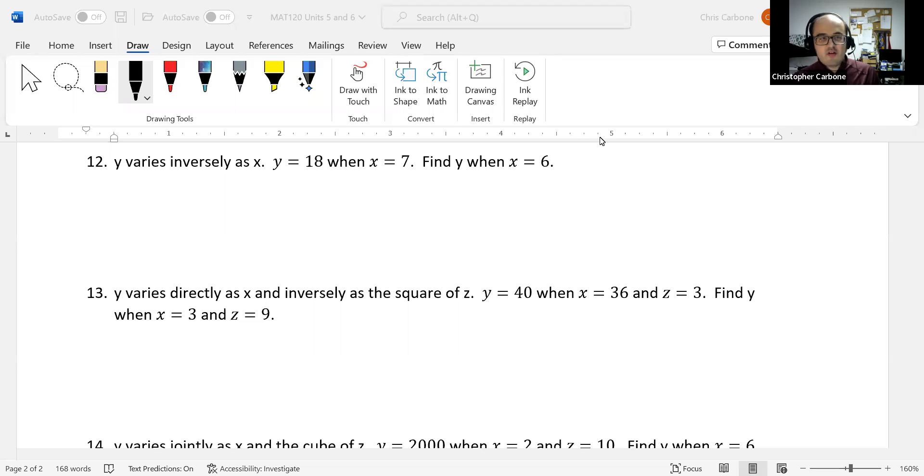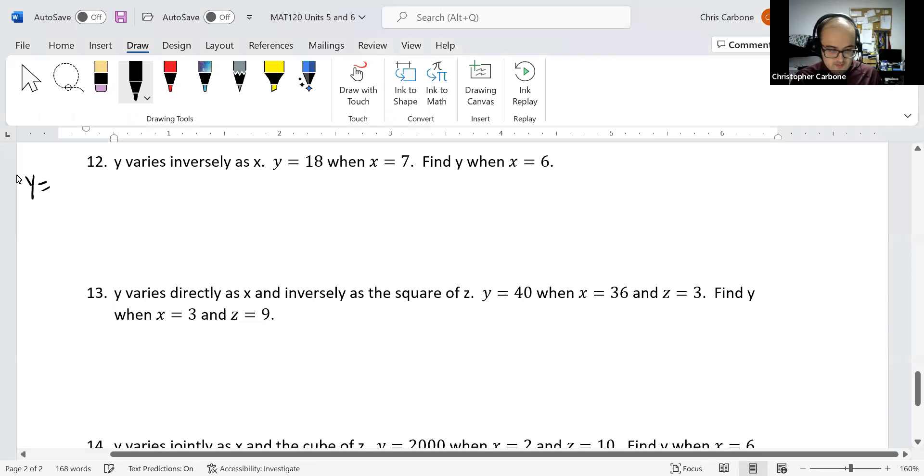Welcome to question number 12 of our rational functions review. Here, y varies inversely as x, so the basic equation for this is y equals k divided by x.